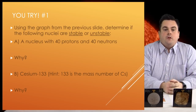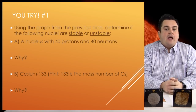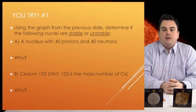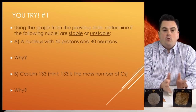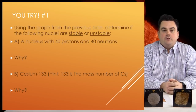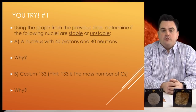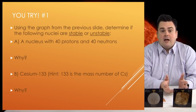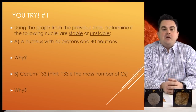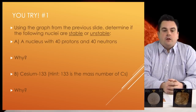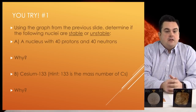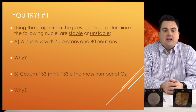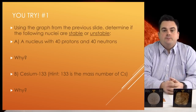You try number one. Using the graph from the previous slide, determine if the following nuclei are stable or unstable. A: a nucleus with 40 protons and 40 neutrons — why? B: Cs-133. Here's a little hint: 133 is the mass number of Cs. Again, explain why.